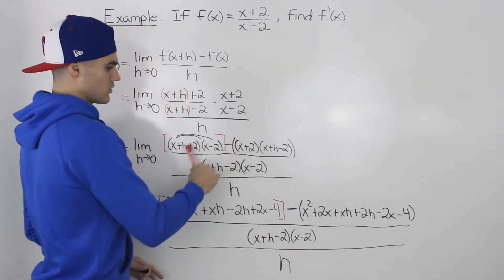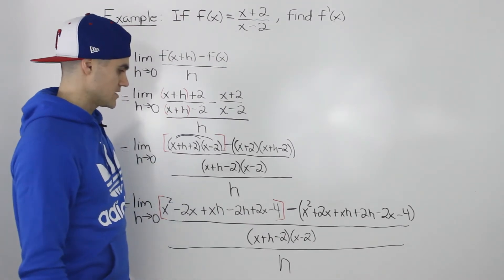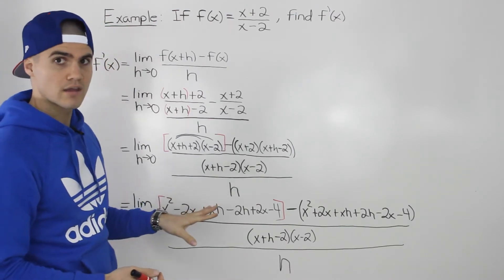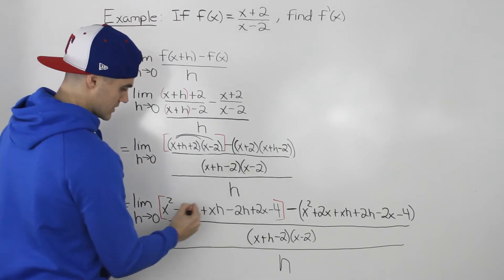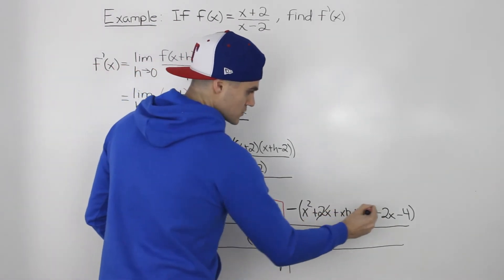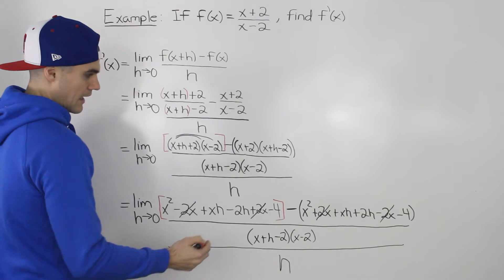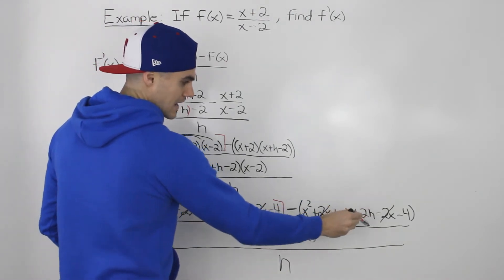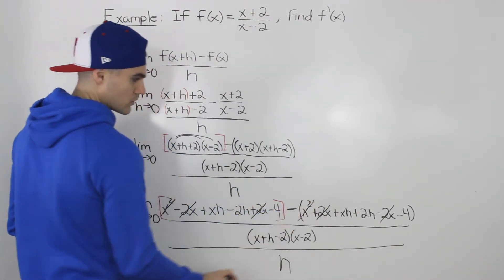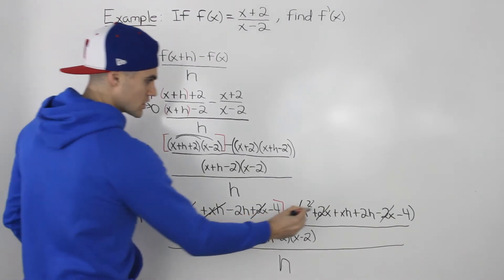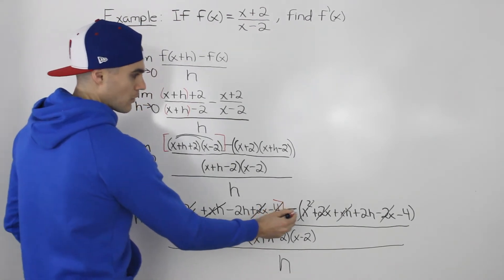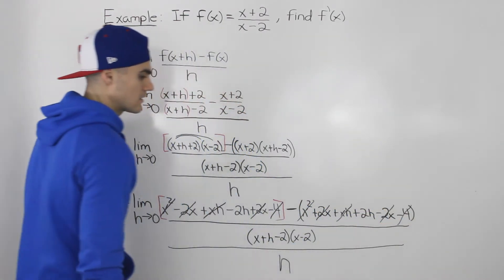We just expanded that numerator. At this point the algebra is pretty intense, but a lot of things cancel out. The -2x and +2x cancel. In the second bracket, +2x and -2x cancel. When we distribute the negative inside the bracket, all signs change, and then x² and x² cancel, xh and xh cancel, and -4 minus (-4) also cancels out.